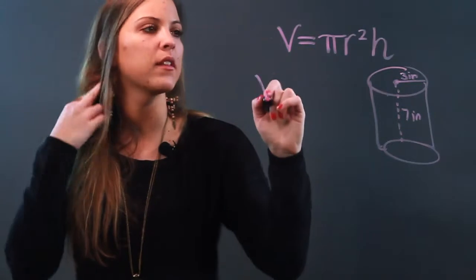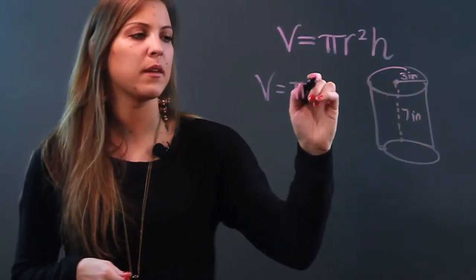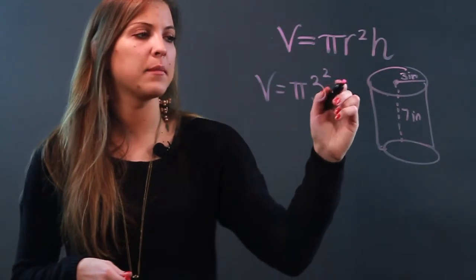What we're going to do is just substitute into the formula. So you have v equals pi times r is the radius. So 3 is my radius. So I have 3 squared times 7.